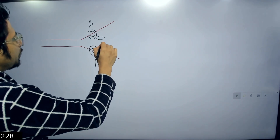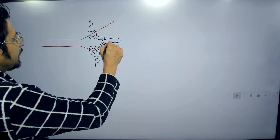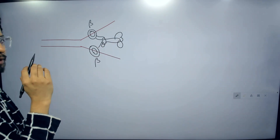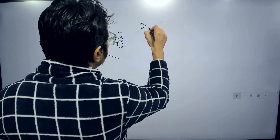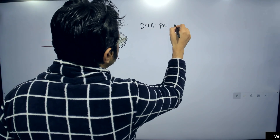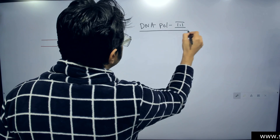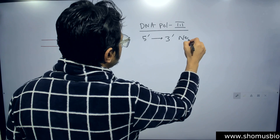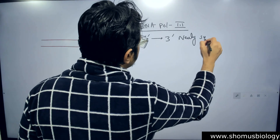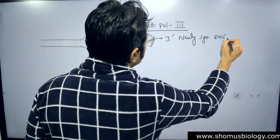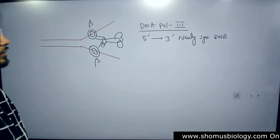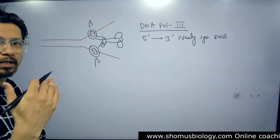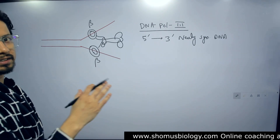Apart from that, the rest of the structures of the polymerase are connected. This DNA Polymerase 3 moves in the 5 prime to 3 prime direction of the newly synthesizing DNA. So while synthesizing new strands, this DNA Polymerase 3 will move from the 5 prime to 3 prime direction of the newly synthesizing strand.